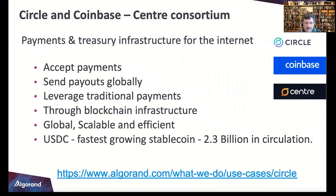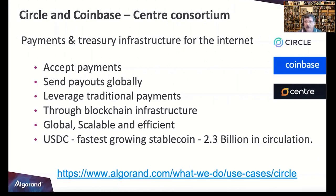One of the problems inherent in cryptocurrency — you may have heard about this — is the fluctuation. One day it's very high, next day it's very low. It makes it really tough to do transactions; people can get burned just by the timing of the price. What USDC does as a stable coin is tie itself to the US economy, so as the US economy fluctuates, so does USDC.